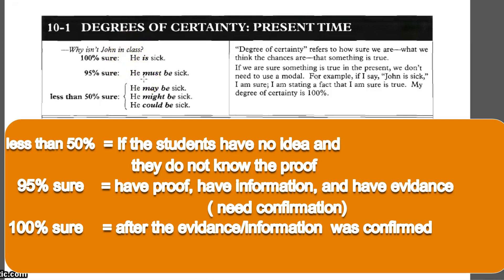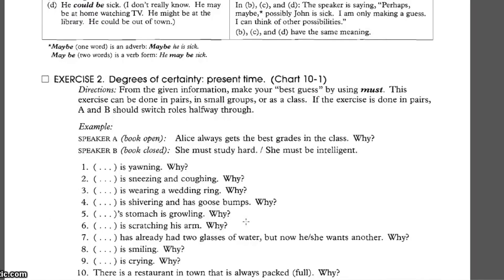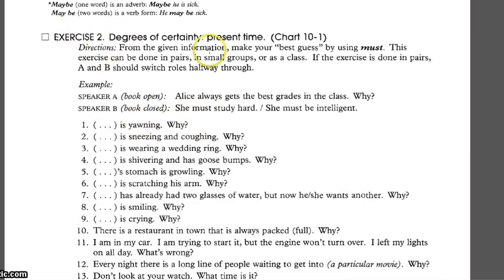Degree of certainty needs proof, evidence, and logical conclusion. Please look at exercise 24. Number 1: someone is yawning — 'She is yawning. Why?' Kita melihat seseorang yang sedang menguap. Berarti kita sudah punya asumsi dari fakta yang kita lihat.